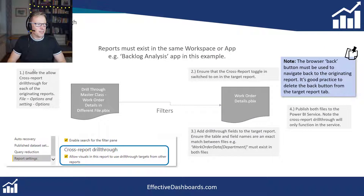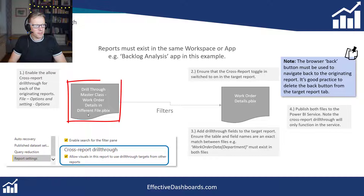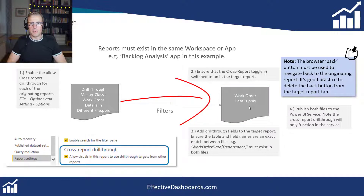So let's get started. Just to cover the big picture, I've put this little slide together here. It covers the four steps that we're going to take to set this up. In the middle here we can see we've got two files: the drill through masterclass work order details file, which is going to be the original report, and we're going to set up a drill through to look at the work order details tab.